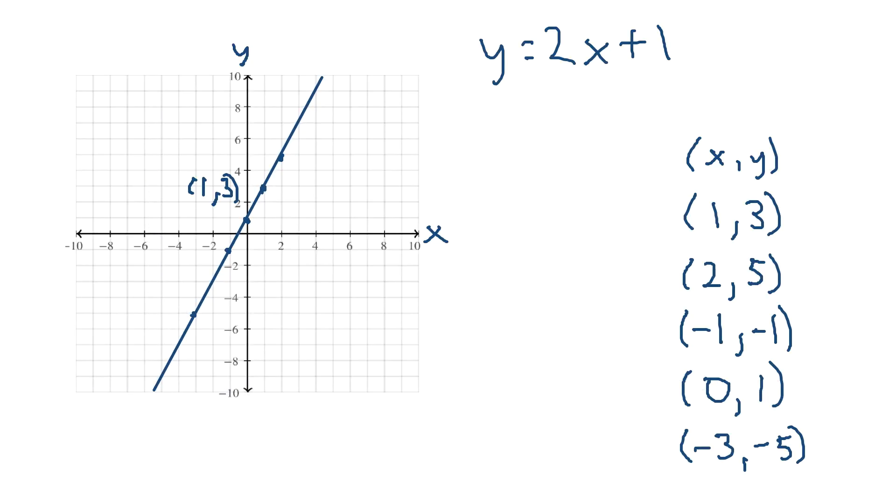And then we can draw arrows on both sides to indicate that this line actually goes on forever. And so this line goes through all the points, and we successfully graphed y equals 2x plus 1.